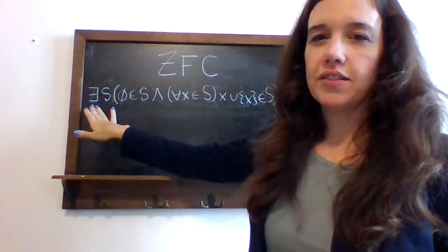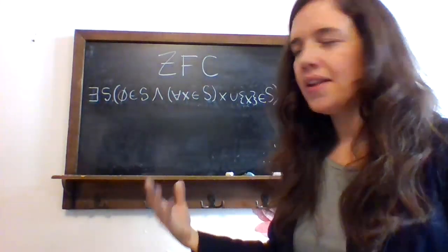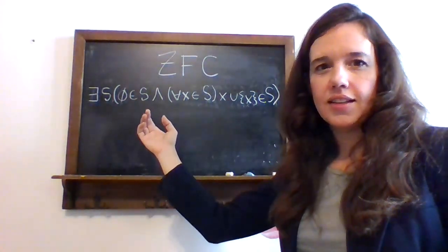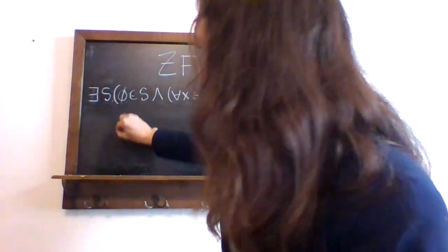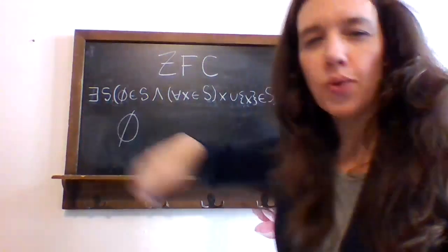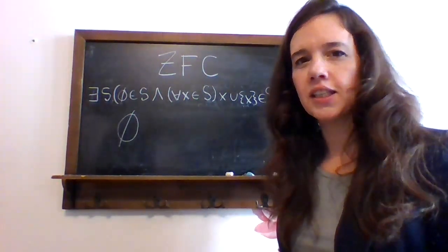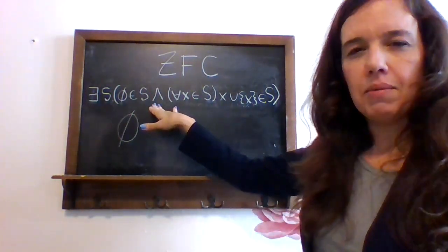This symbol means there exists. There exists an S - there exists a set such that the empty set is in S. The empty set is the set that contains no elements at all. So S has nothing. Well, that's something.